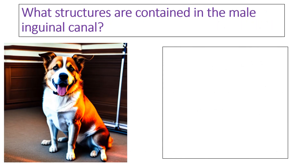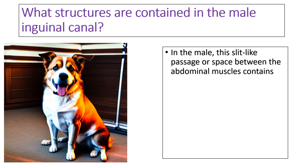The inguinal canal transmits important anatomical structures mainly related to the reproductive system of the male animal. In the male, this slit-like passage contains the spermatic cord, which is a paired structure whose main function is to suspend the testes inside the scrotum. It consists of structures that allow the testes to function normally, including the ductus deferens, the testicular artery, the testicular vein, lymphatic vessels, and connective tissue.